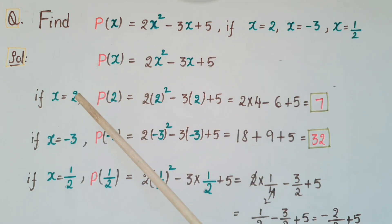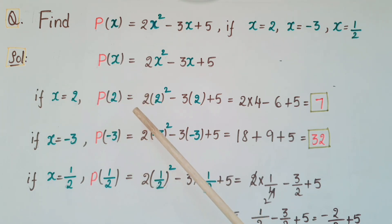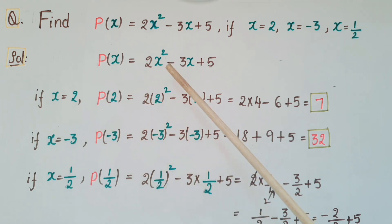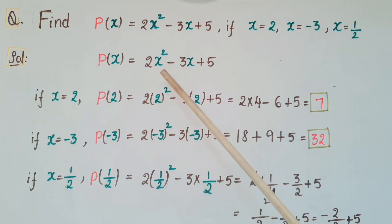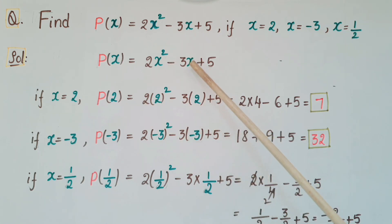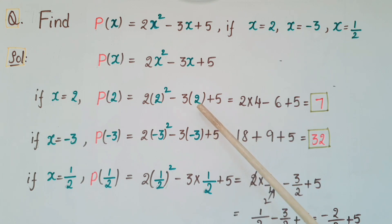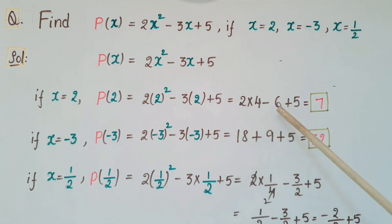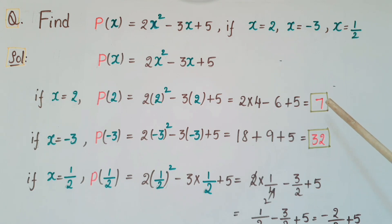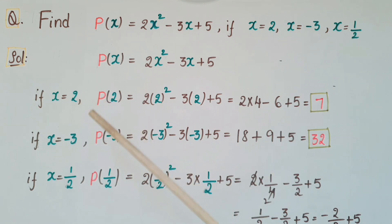For x = 2, replace this value: p(2) = 2 × (2)² - 3 × 2 + 5, that is equal to 2 × 4 - 6 + 5, that is 7. So the polynomial value here is 7 if x is equal to 2.